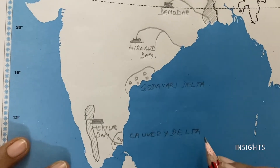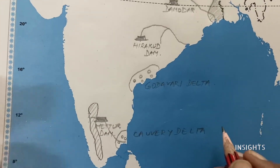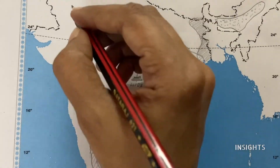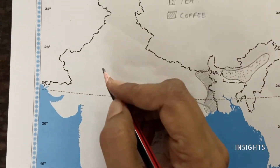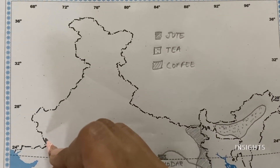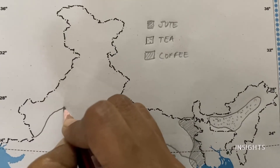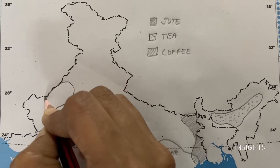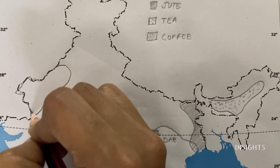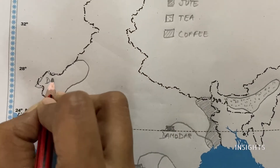One more — the last question is to demarcate the desert soil. We have to go to the northwest near Rajasthan, where the Thar Desert is located. Mark that area and write 'desert soil' directly on the map.